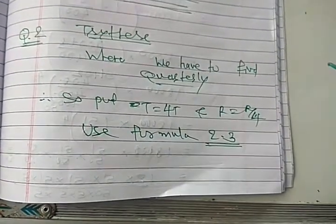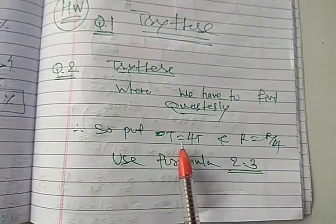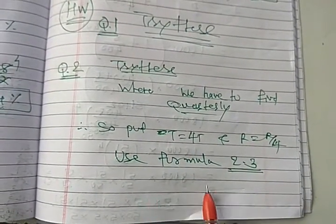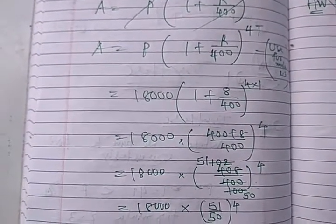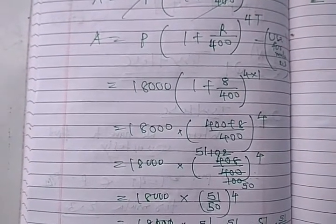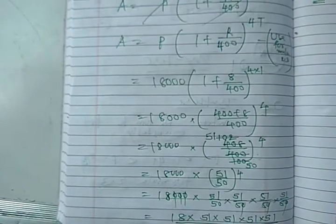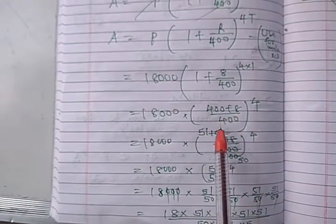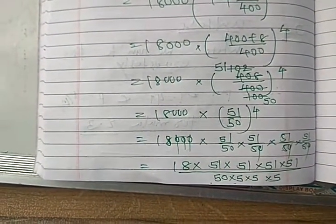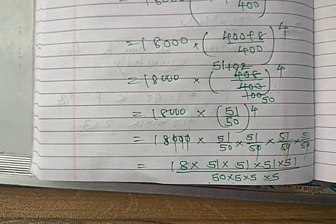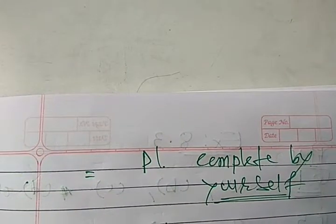Question number 2 try this where you find out quarterly. So quarterly, T equal to 4T, R equal to R upon 4, use formula 2.3. Here it is a solution. You see A equal to P into 1 plus R upon 400 raised to 4T, because use formula 2.3. Because here it is interest counted by quarterly. Remaining calculation is as it is. You can copy from here. This I have done half, you have to do it completely. Do your calculations by your own way, please complete by your own way. Please complete this calculation by yourself.